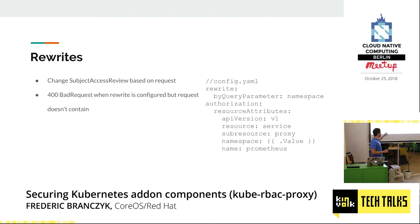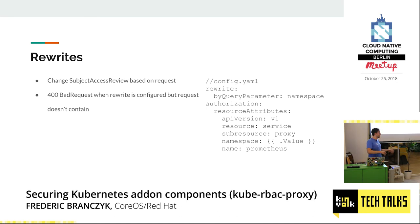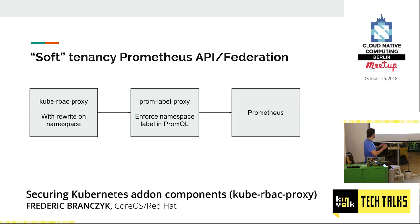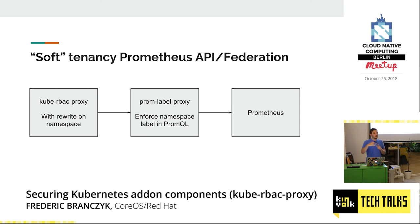The rewrite functionality is super simple to use. You just add an additional entry in the config file and then you can use Go templates to configure this. Most importantly, for this to actually be secure: when this is configured and no query parameter is given, that's a bad request — because otherwise we would just let this through and give access to everything again. Really what this then creates is something that we named soft multi-tenancy for the Prometheus API and for the federation endpoint. But this is also only safe if users cannot configure what's being scraped, because otherwise you can pollute other tenants' data — because in Prometheus, labels are freeform. Someone could add additional labels and pollute other people's data. So this is a very specific use case — if this is what you want to do, come talk to us and we'll see if this actually makes sense.